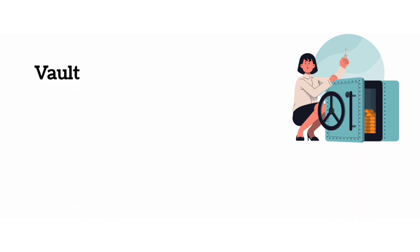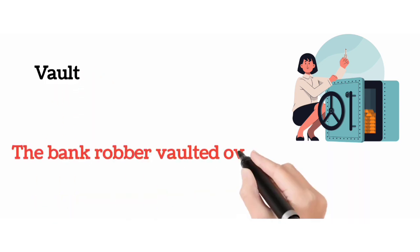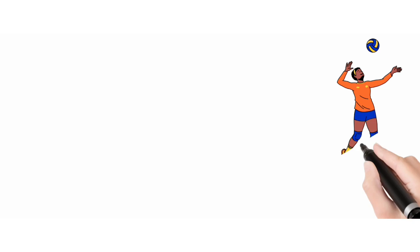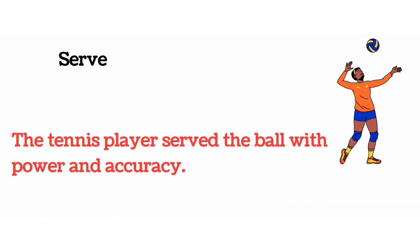Vault. The bank robber vaulted over the counter and escaped with the money. Serve. The tennis player served the ball with power and accuracy.